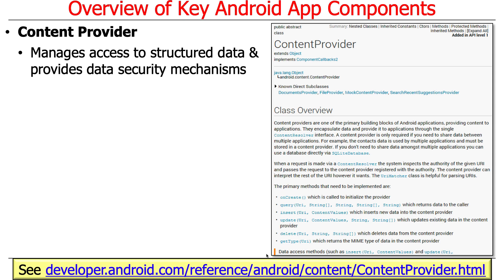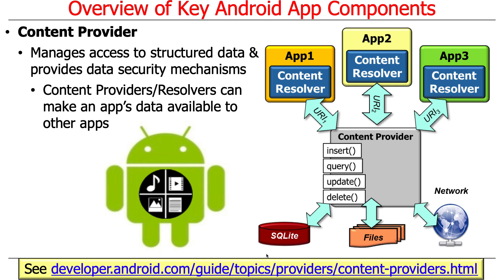The fourth type of component is called a content provider. This is used to manage access to structured data, and it also provides certain data security mechanisms if you need to share data in a secure way. Content providers and something called content resolvers — which are the proxy used by different apps to get to content providers — can make data that one app creates visible to other apps. The interface gives you the canonical CRUD operations: create (insert), read (query), update, and delete.